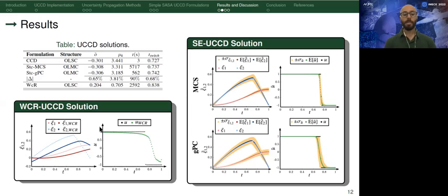For worst-case robust UCCD, the results are presented at the bottom left of this slide. Notice that we have a single control trajectory, and notice that the terminal conditions are relaxed in order to enable a solution. The solution, however, is very insensitive to the realization of uncertainties.